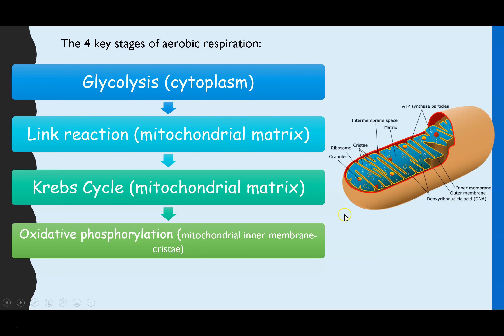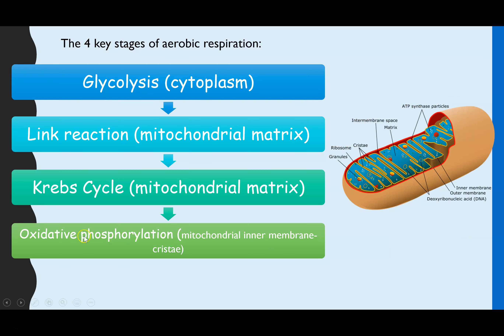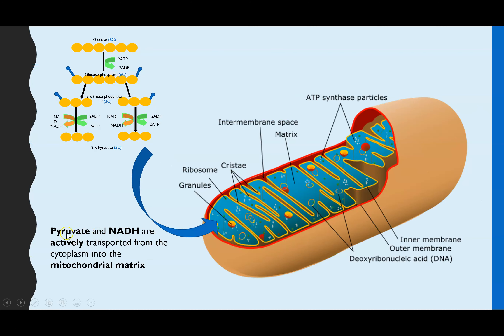The first thing is that two of the products from glycolysis — which we can see a summary of here — have to be actively transported from the cytoplasm, where glycolysis occurs, into the mitochondrial matrix. Those are pyruvate and reduced NAD, or NADH. NADH won't be used until the final step, oxidative phosphorylation, but pyruvate is used immediately in the link reaction.